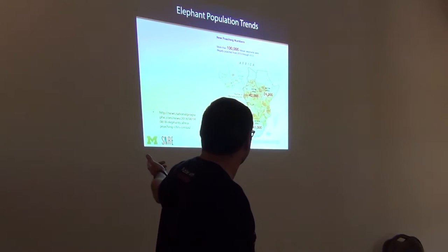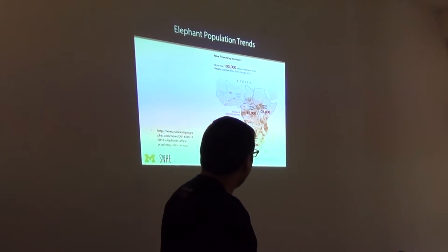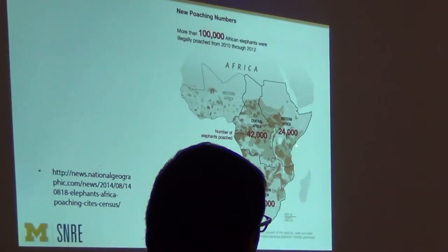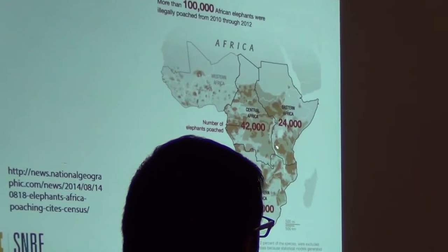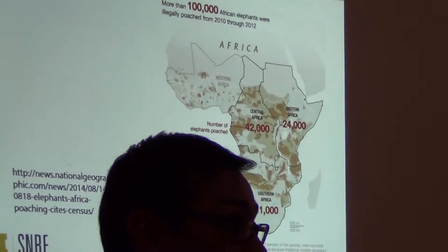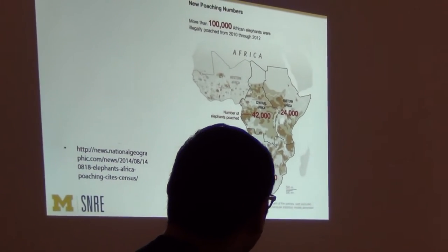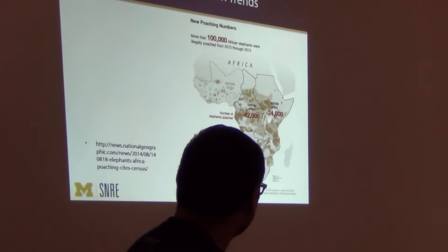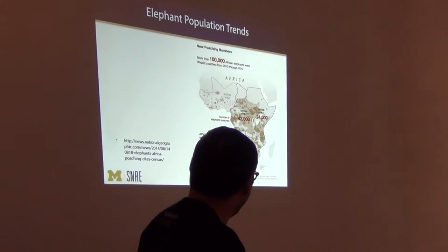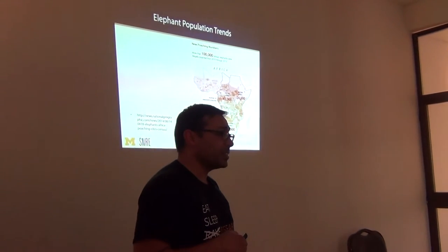Let's talk about the conservation of elephants in Africa. Looking at poaching numbers: 24,000 elephants were poached in eastern Africa from 2000 to 2012; 42,000 in central Africa; 41,000 in southern Africa. The range of elephants in 1979 was 1.3 million; by 2007 it was 472,000 to 690,000 — a 50% decline.